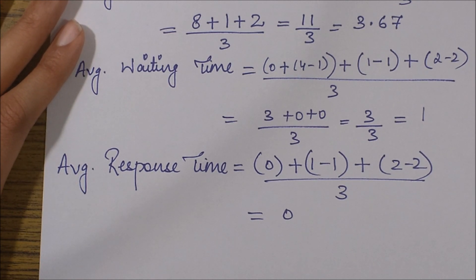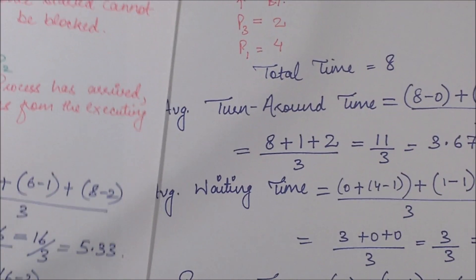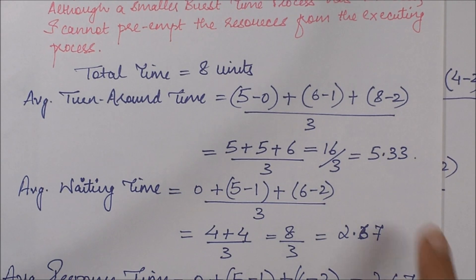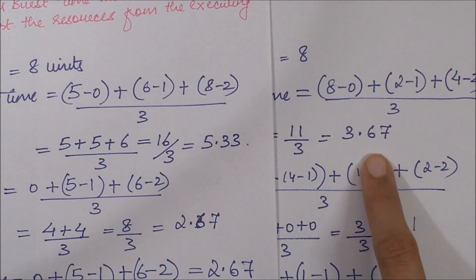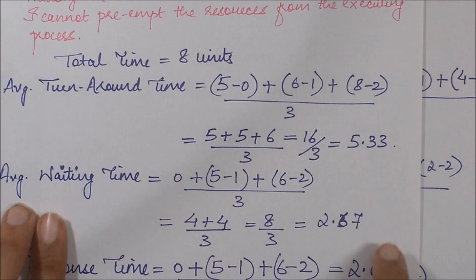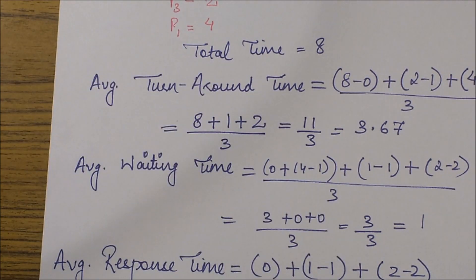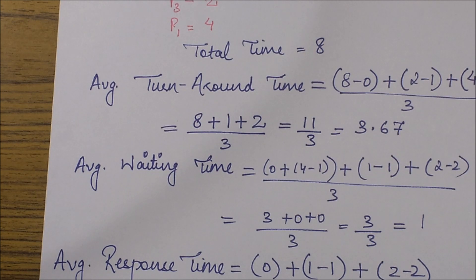Comparing with the non-preemptive version: the average turnaround time in the previous session was 5.33, and in the preemptive version it is 3.67. The average waiting time was 2.67 before and is now 1. The average response time was 2.67 and is now 0. So the measures do differ in the preemptive version of an algorithm. That's all for the discussion on Shortest Job First. We will continue with more algorithms in the next session — stay tuned, thank you.